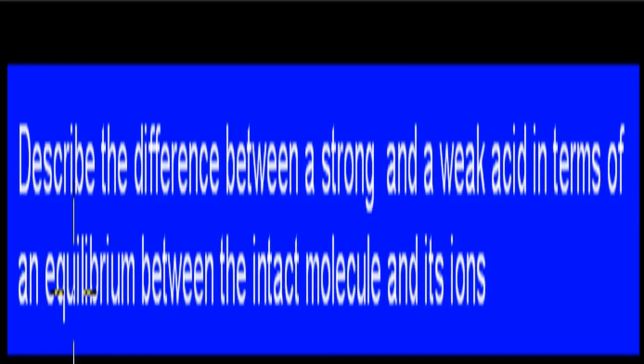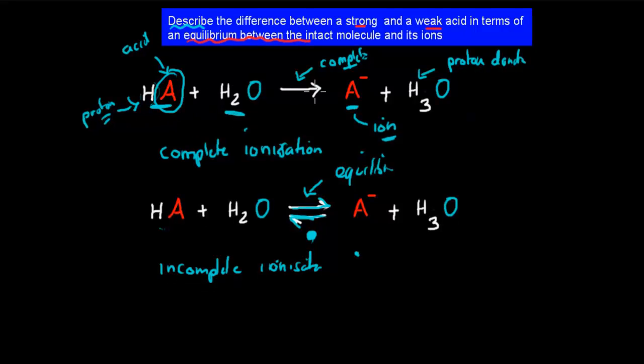So I'm going to quickly go over the dot point. It says describe the difference between a strong and a weak acid in terms of the equilibrium between intact molecule and its ions. We just mentioned that, for example, for a strong acid, there is no equilibrium. All of the actual molecules will not be intact at the end. They'll all be ions.